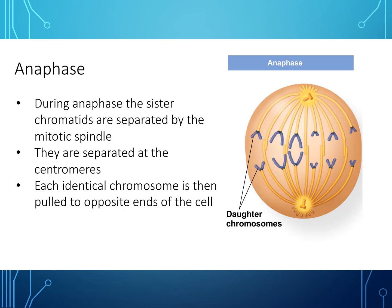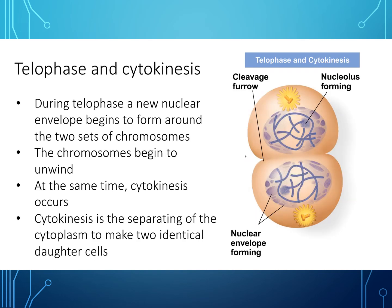During anaphase, the sister chromatids are separated by the mitotic spindle at the centromere, and each identical chromosome is pulled to opposite ends of the cell. During telophase, a new nuclear envelope begins to form around the two sets of chromosomes and the chromosomes begin to unwind. At the same time, cytokinesis occurs — the separating of the cytoplasm to make two identical daughter cells.